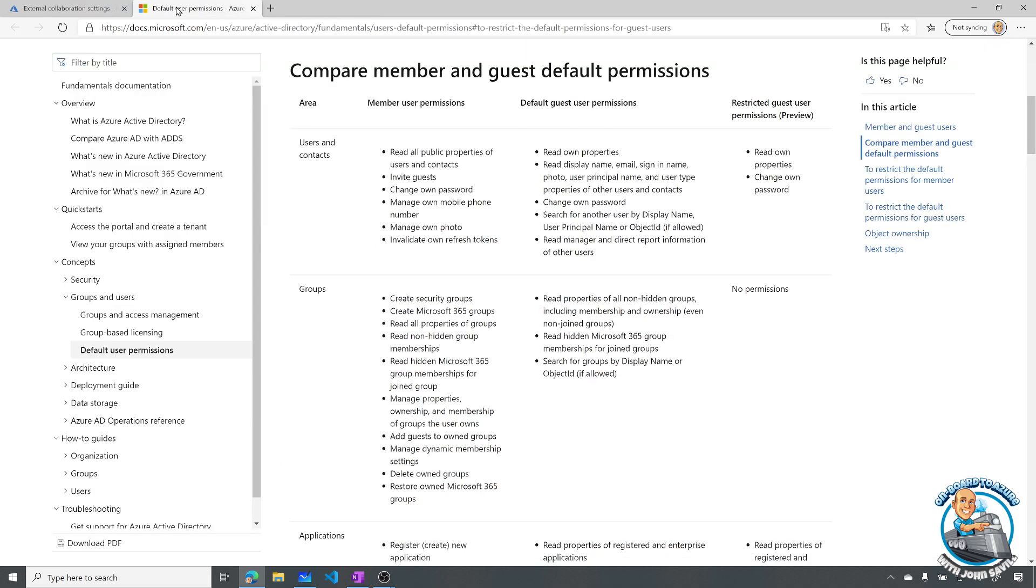There's actually a Microsoft article. That talks through all these different levels of permissions. So member user permissions. Default guest permissions. And restricted. And as you can kind of see. It walks through.